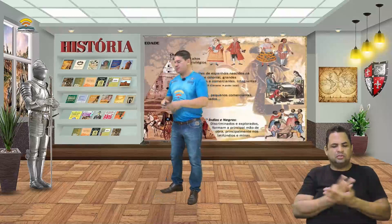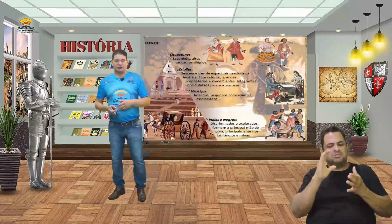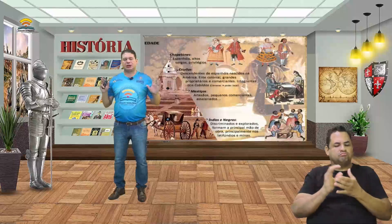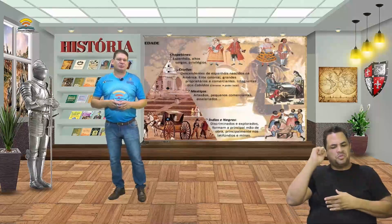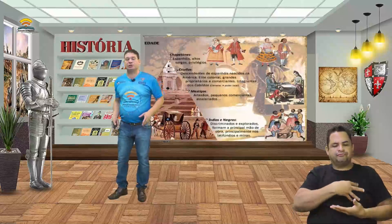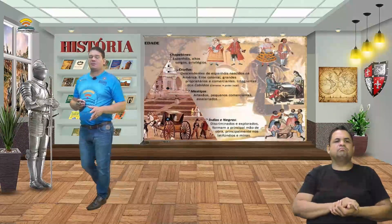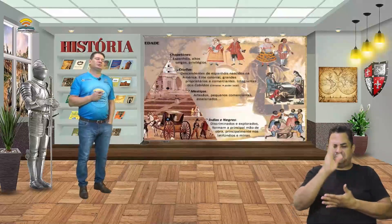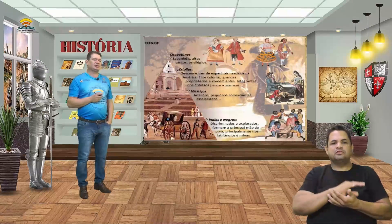A miscigenação ocorreu? Ocorreu. Os espanhóis casaram com indígenas, com negros, tiveram filhos. Mas não foi tão forte como no Brasil. Essa miscigenação não teve a mesma intensidade que se deu aqui no Brasil.